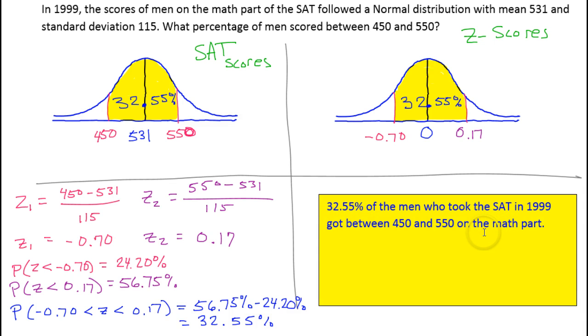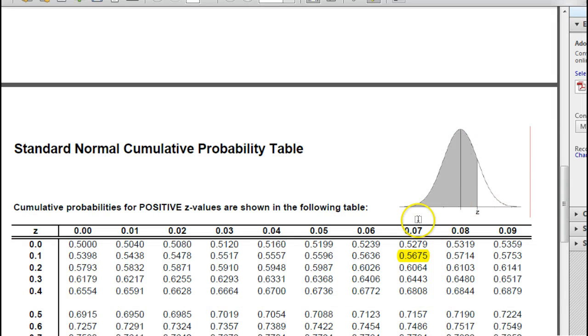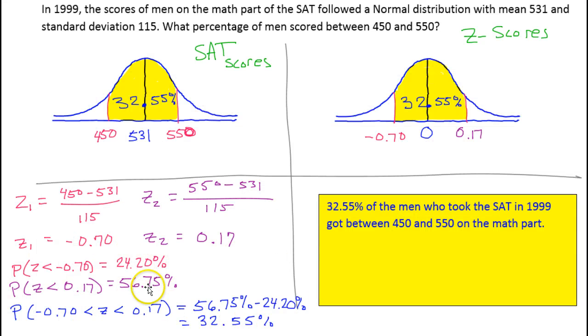And that is the final answer. So just to summarize, if you want to do between two numbers, obviously convert them both into z-scores. Find those percentages right off the chart. They are less than percentages, but find those percentages right off the chart, and then subtract them. So if you want to find the percentage between two z-scores, you subtract those percentages that you got off the chart. And that will give you the percent between.